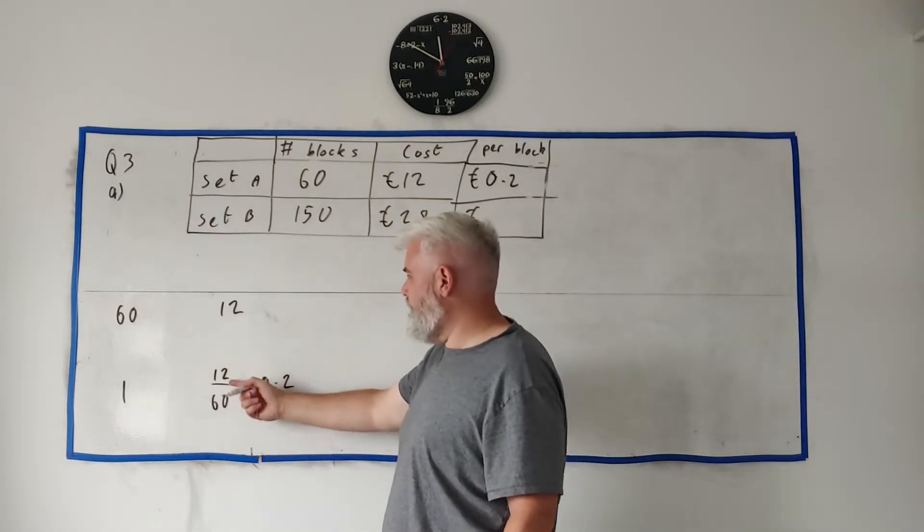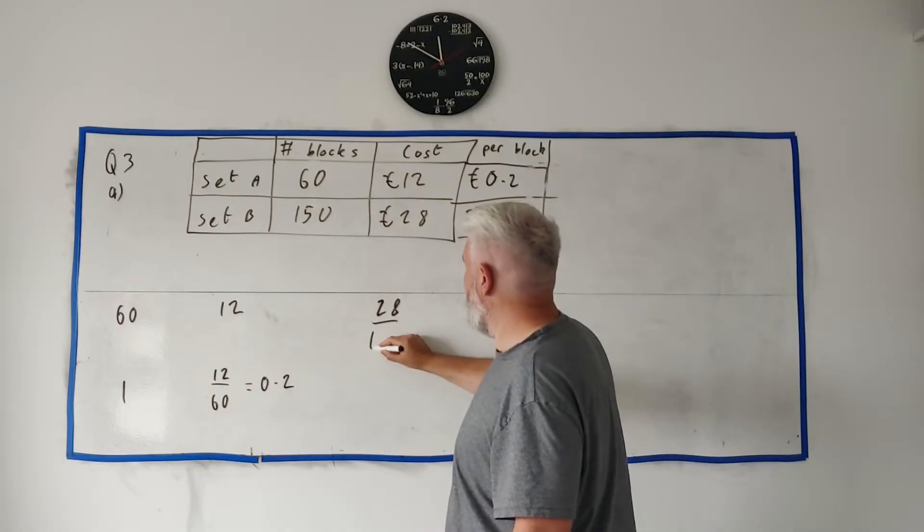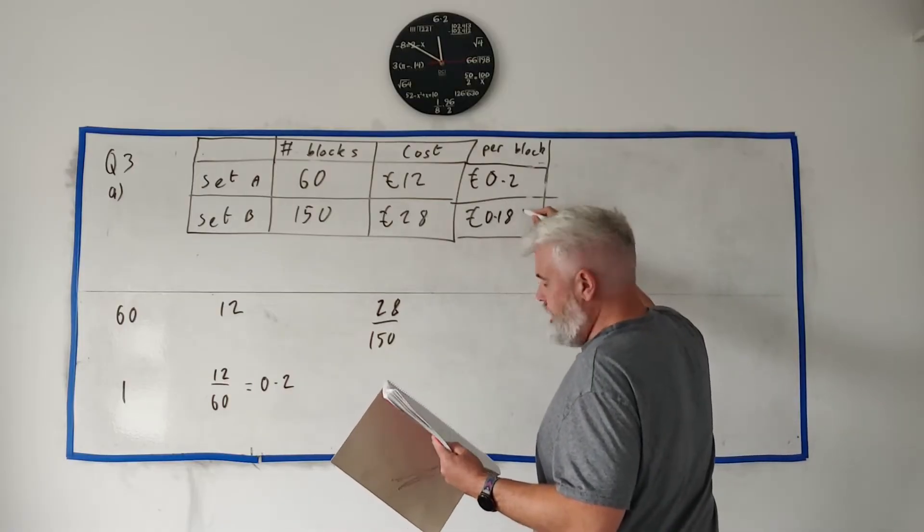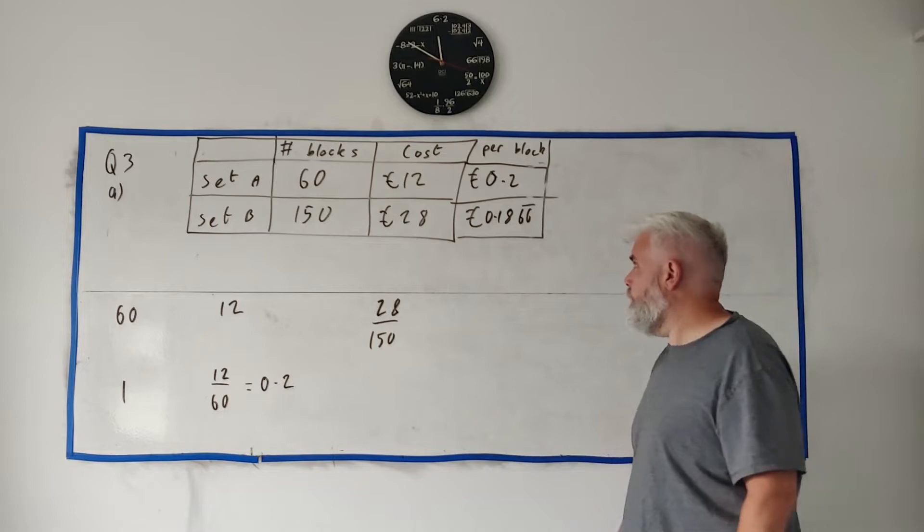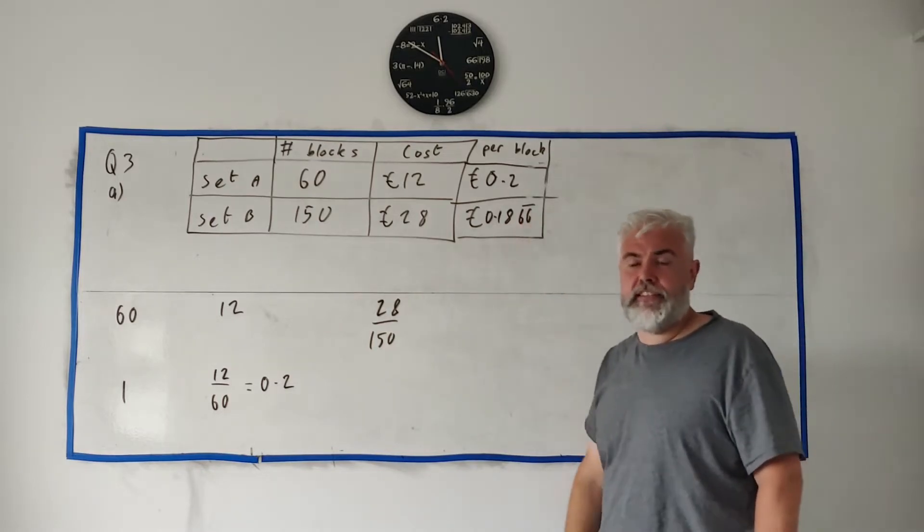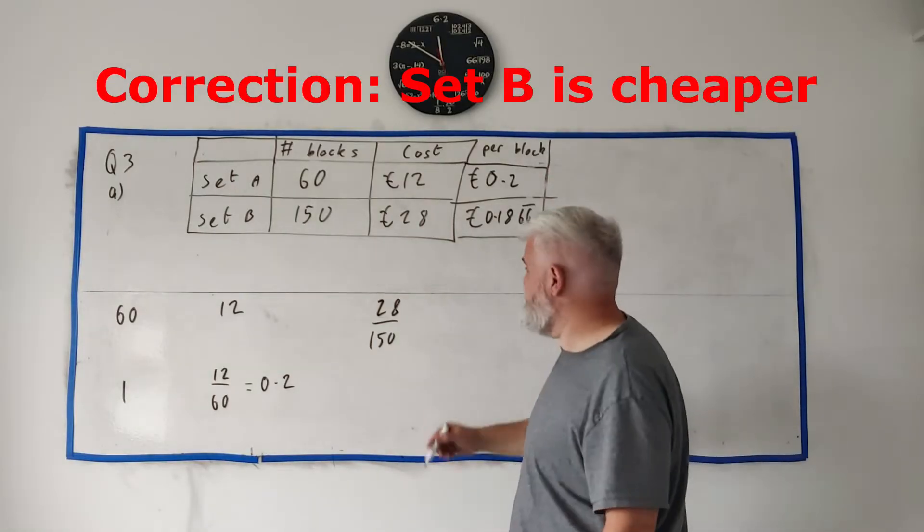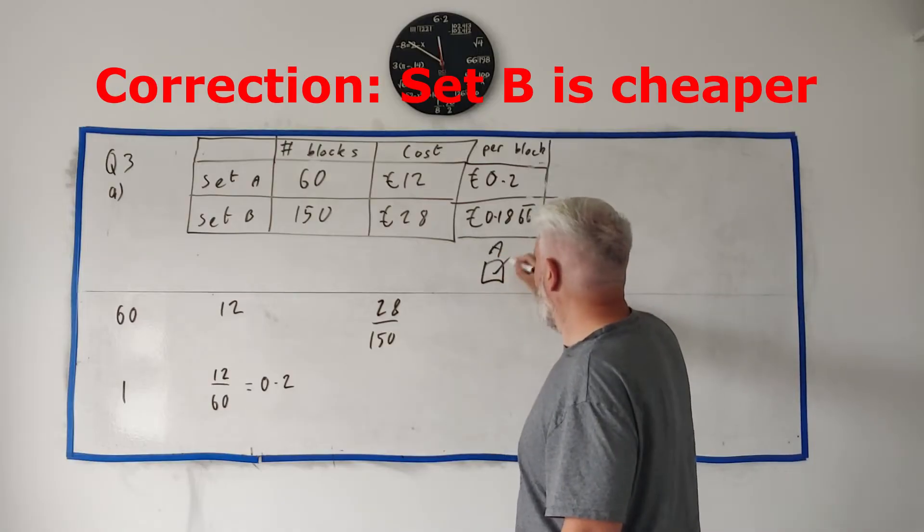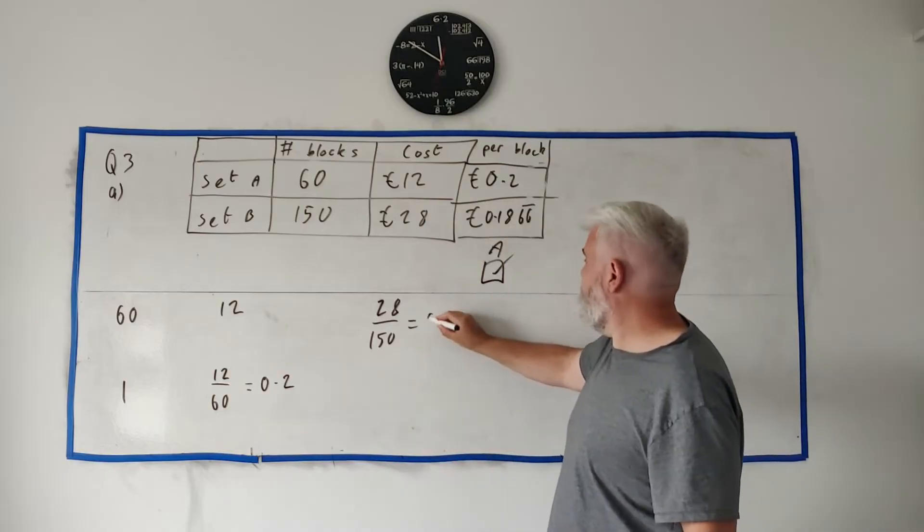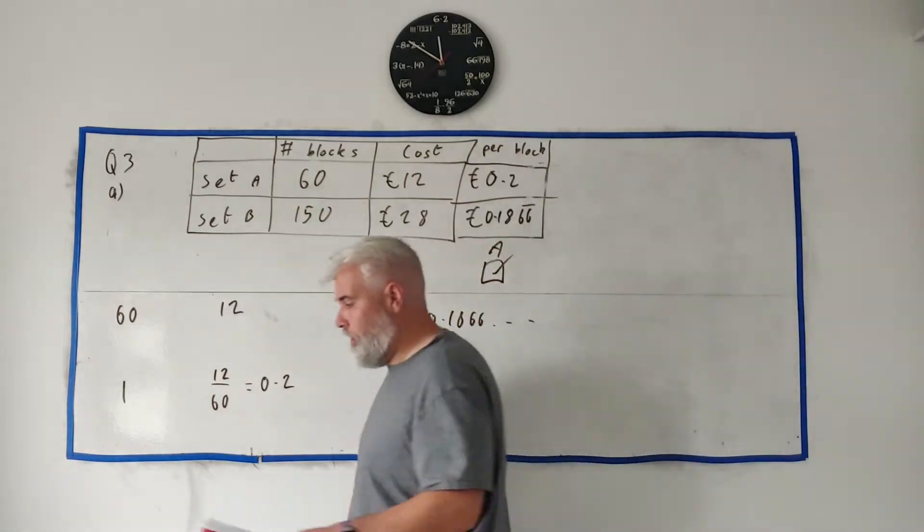The other one, do the same thing. 12 divided by 60. The other one is 28 divided by 150 and that comes out as 0.1866 repeating, or 18 cent, nearly 19 cent. So which is cheaper? Set A. So tick the box that says set A. And for calculations this is enough, these two numbers here. Write in what it actually equals. You can round that off as much as you want really.